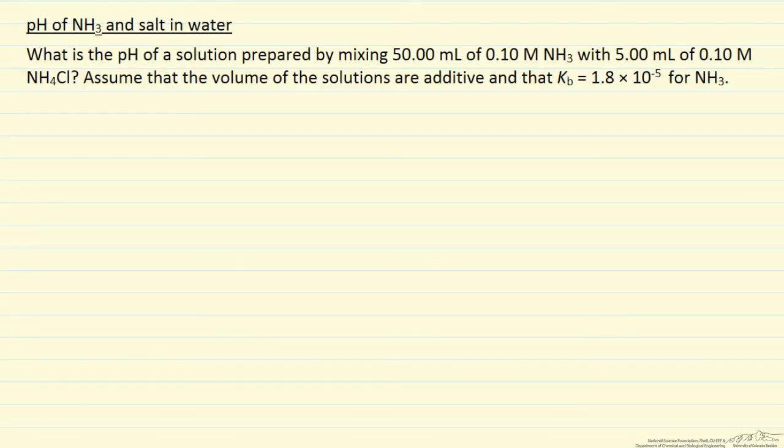In this problem we're calculating the pH of a solution that contains both ammonia and an ammonium salt, ammonium chloride, and we're given the volumes of the two solutions that we mix together. We're also given the base ionization constant, essentially a type of equilibrium constant for ammonia reacting with water.